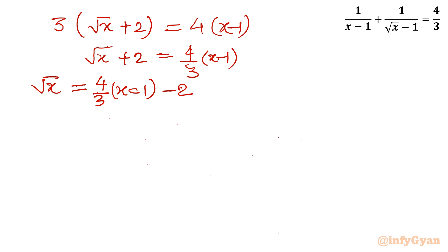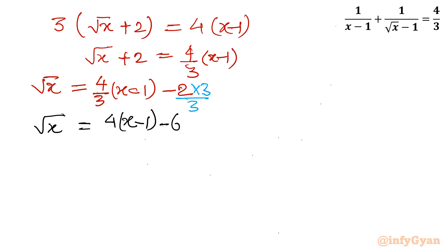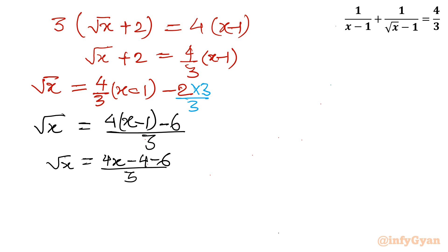Now I will find a common denominator. Multiplying the 2 by 3 over 3, the equation converts to: root x equals [4(x minus 1) minus 6] over 3. Simplifying the numerator: 4x minus 4 minus 6 over 3, giving root x equals (4x minus 10) over 3.